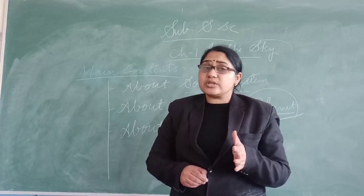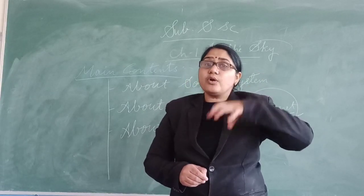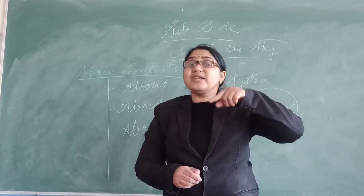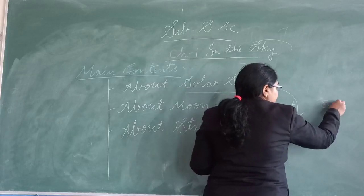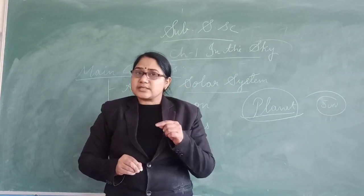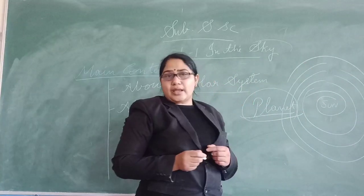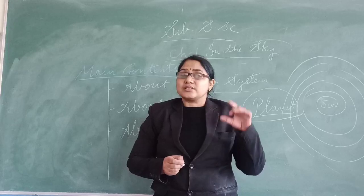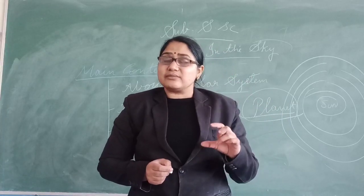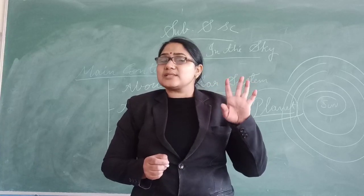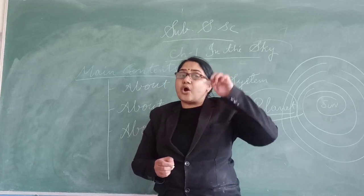Just like Earth, many other planets are also there that form the sun's family. All eight planets revolve around the sun on their orbit lines. The sun is at the center of the solar system, and all eight planets revolve around the sun on their individual orbit lines.